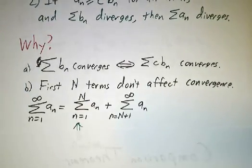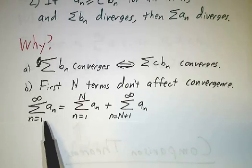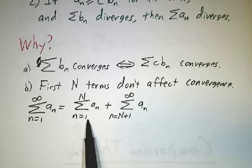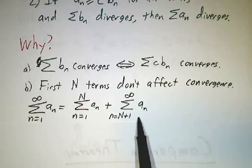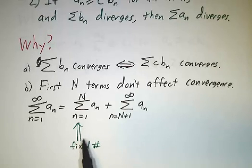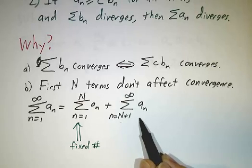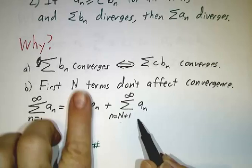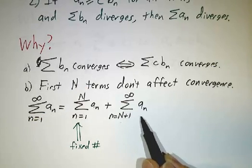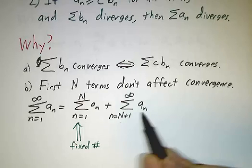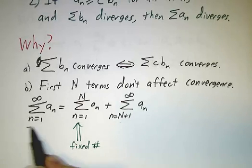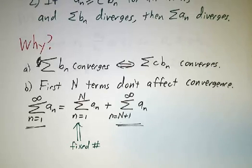The first N terms don't affect convergence at all. If you write out the infinite series, it's the first capital N terms — just a fixed finite number — and then all the rest. Whether things diverge or not is a matter of whether these tail sums are bounded, whether they just add up more and more and go to infinity. If you add a constant to something that goes to infinity, it still goes to infinity. If you add a constant to something that doesn't go to infinity, it still doesn't. So when talking about convergence, you don't care about what happens at the beginning of the series — you're really interested in what happens at the end.